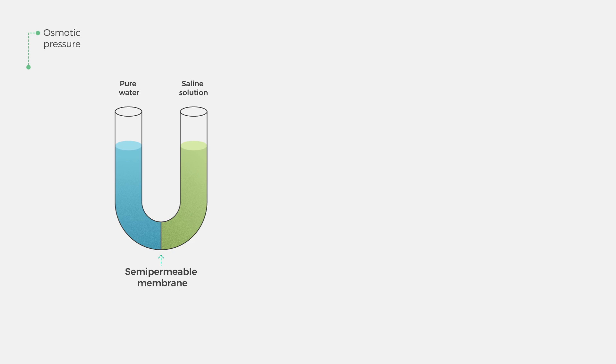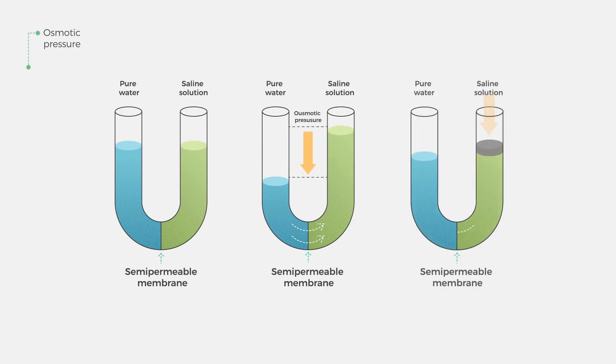When two solutions of different concentrations are separated by a membrane, the solvent's molecules move from the area of low concentration to the area of high concentration, producing hydrostatic pressure, which is the principle of osmotic pressure.